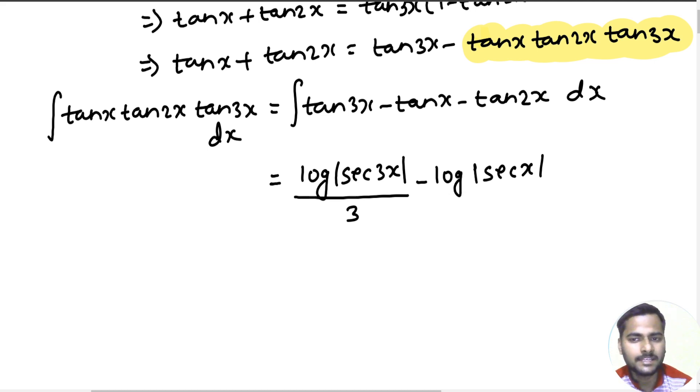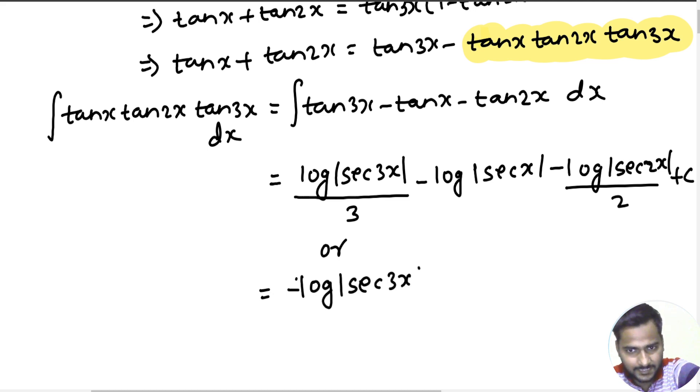And next up you will have minus log sec 2x divided by 2, plus a constant. Or you could have also written this as minus log cos 3x divided by 3 minus minus plus log cos 2x divided by 2.